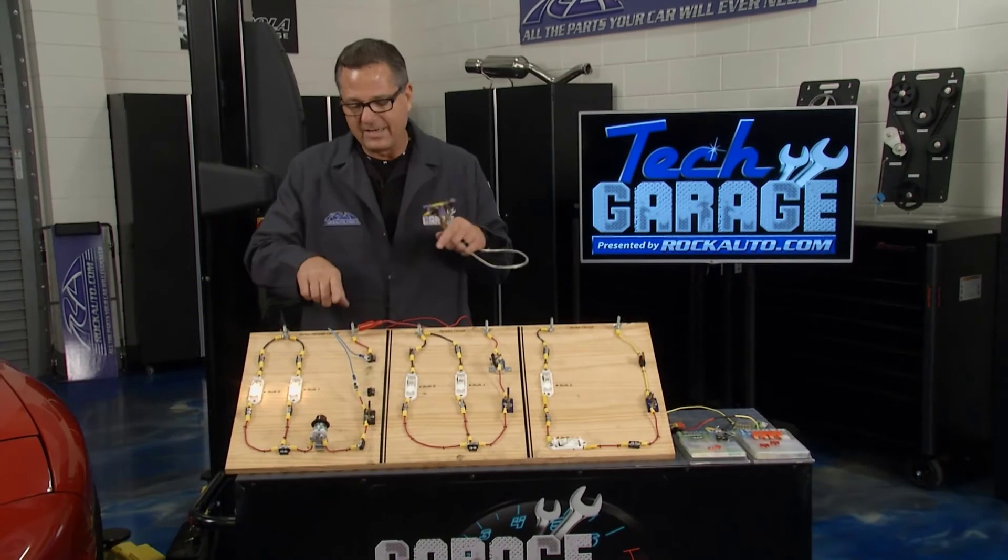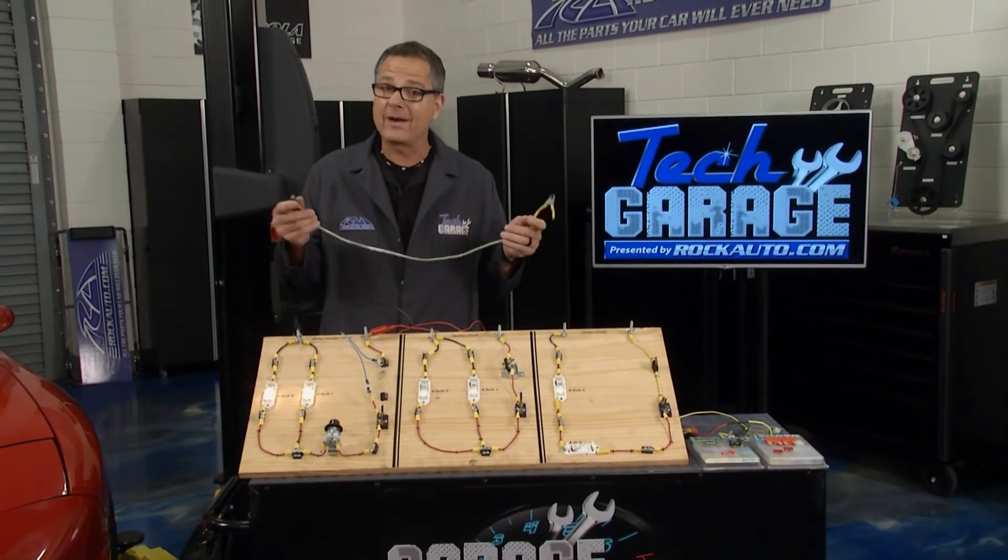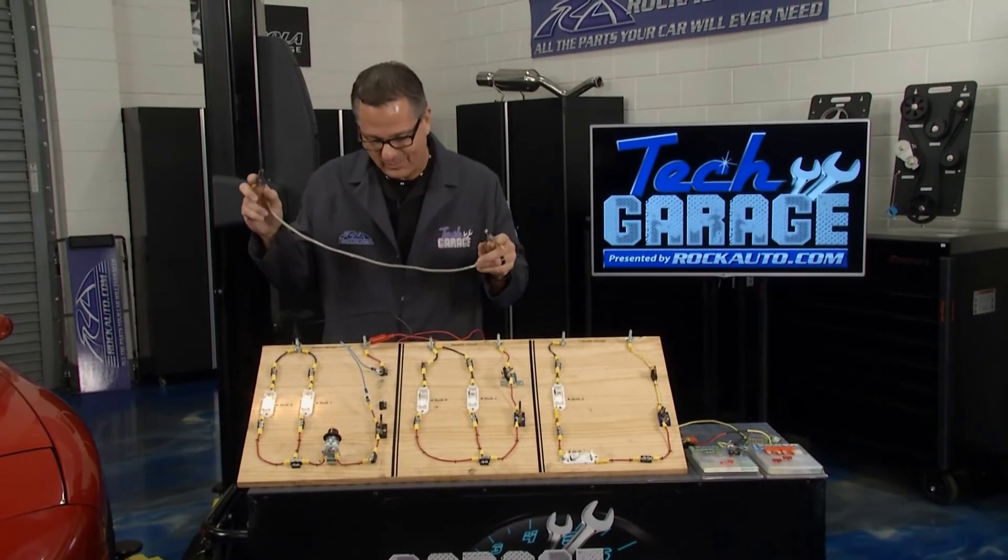Now this one, we have a fusible link. That's four wire gauges smaller than the wire it's protected. Remember, wire gauges, the higher the number, the smaller the wire.